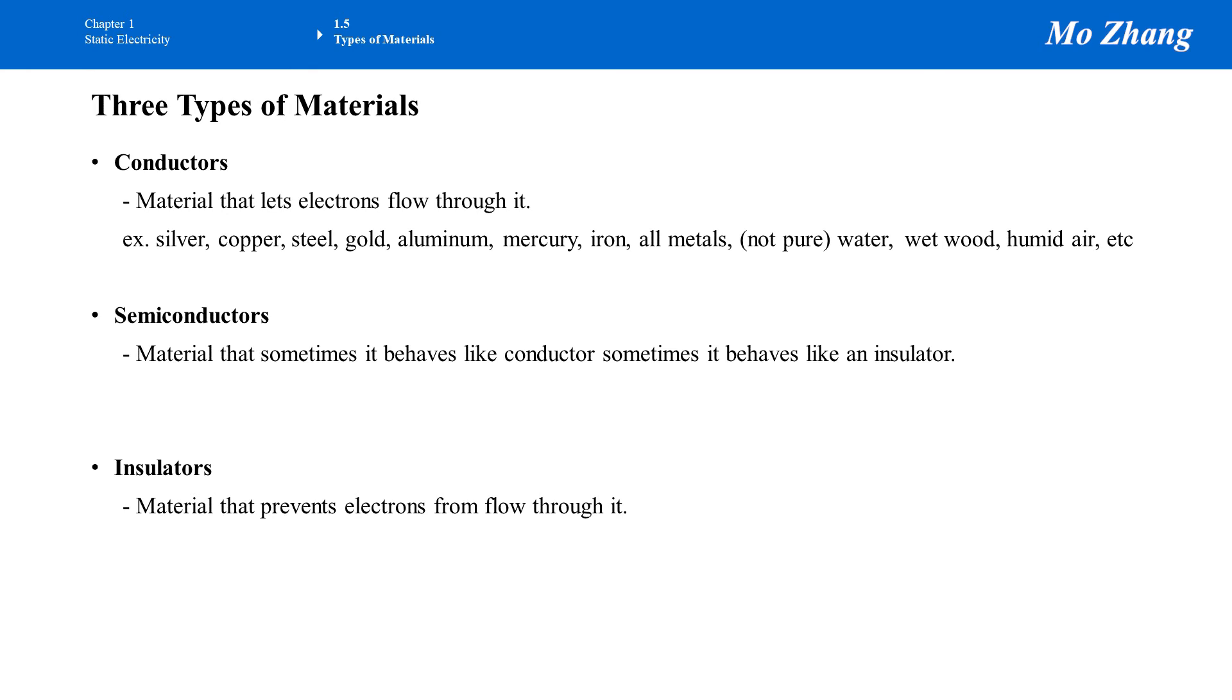Steel is a conductor. Gold is a conductor. By comparison, it is not as good as steel. Copper is worse than silver. Gold is valuable, but in terms of conductivity, it's not that good. Aluminum is a conductor. Mercury, iron, all metals are conductors.